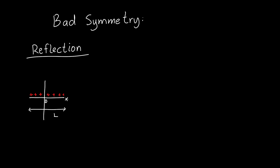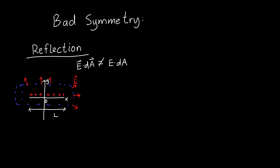If we flip a finite line charge about the y-axis, the charge distribution looks the same — but there's no surface we can enclose it in where the electric field is constant. Over parts of the surface, E points outward; near the ends, it points nearly straight up; on the sides, it points in other directions. Not only is E·dA not simply a magnitude multiplication, but E itself is not constant at a given radius.